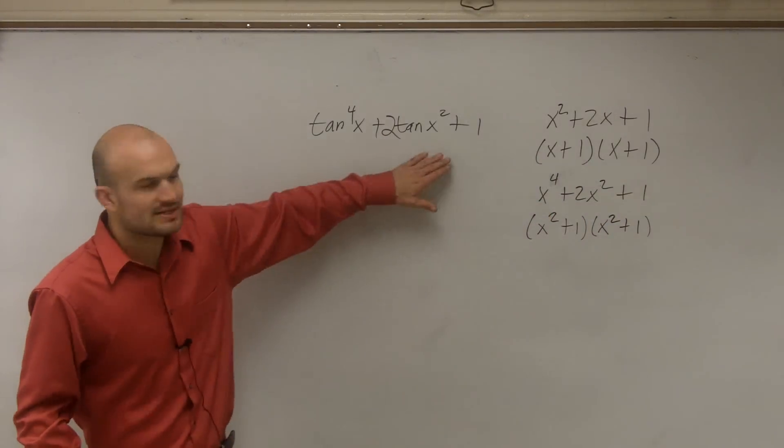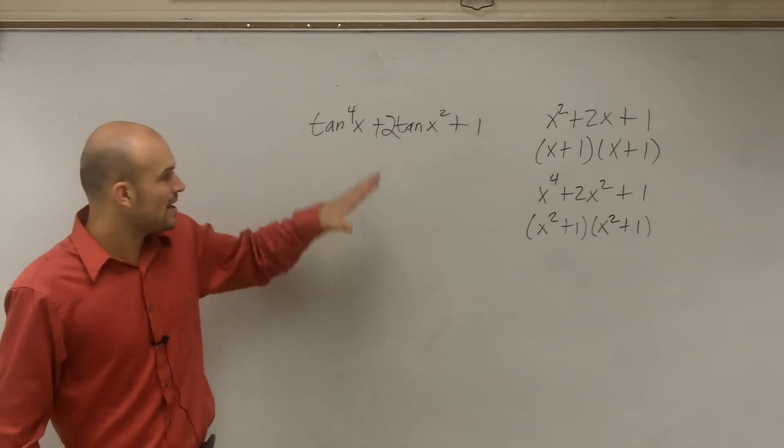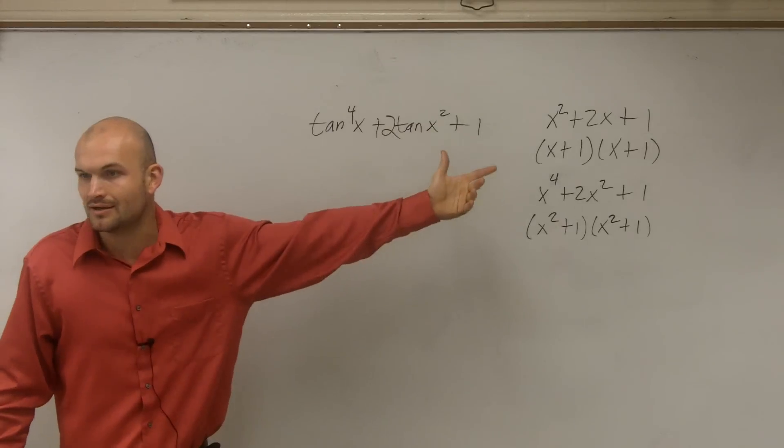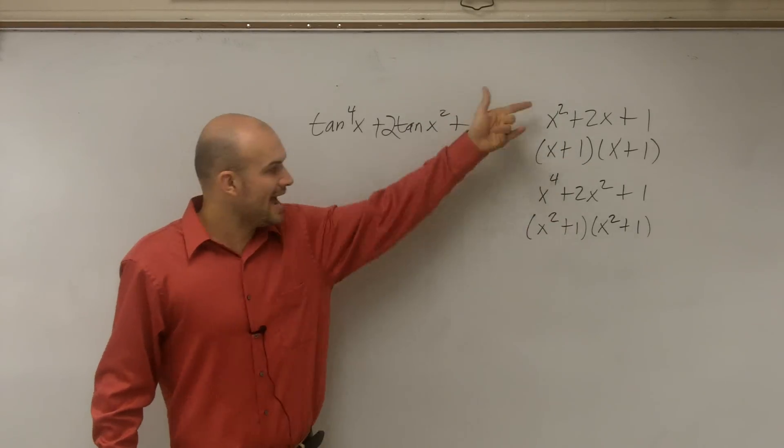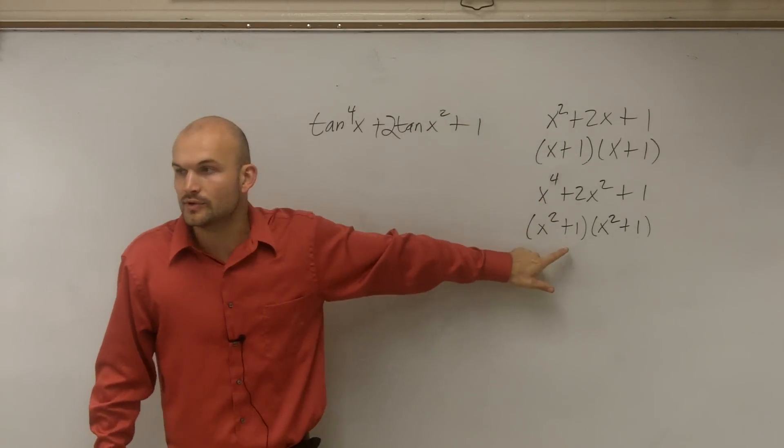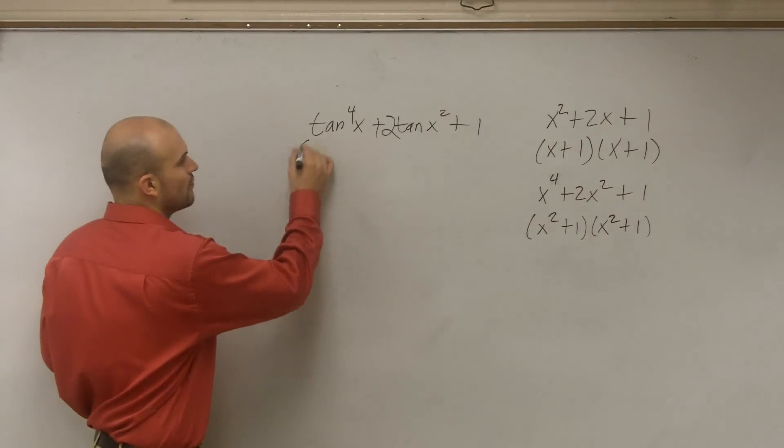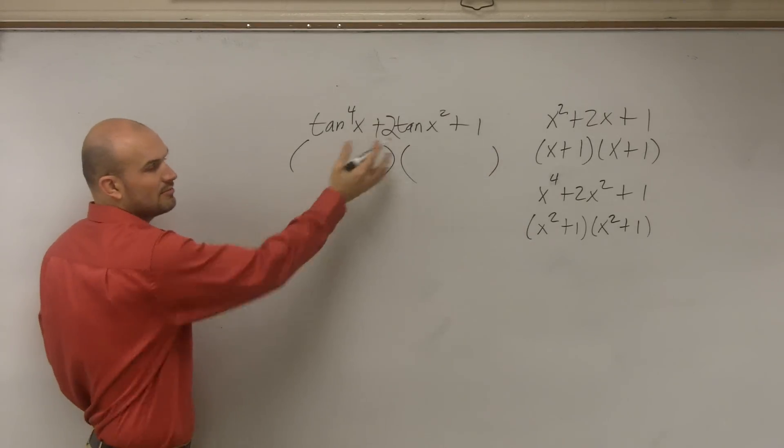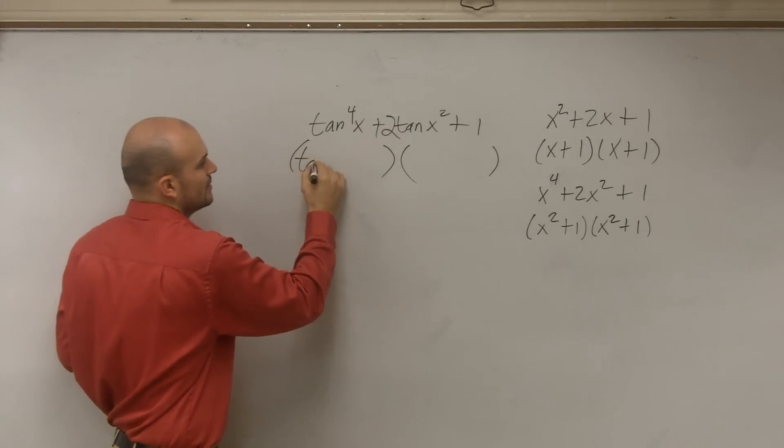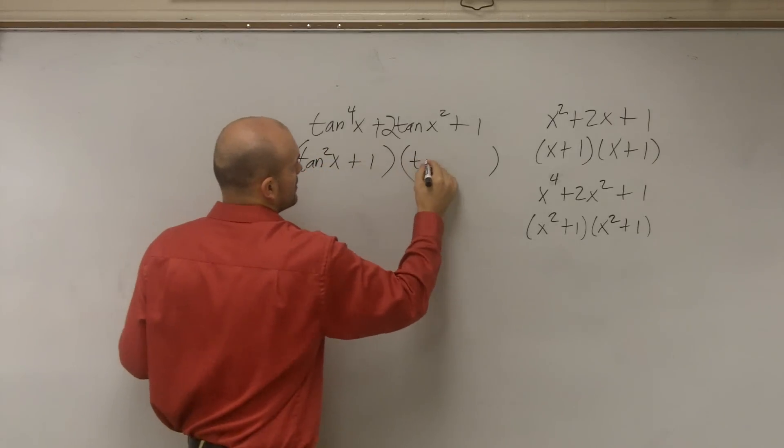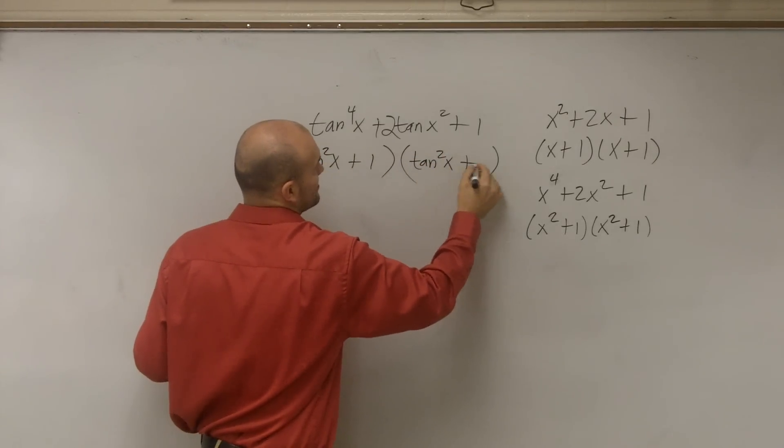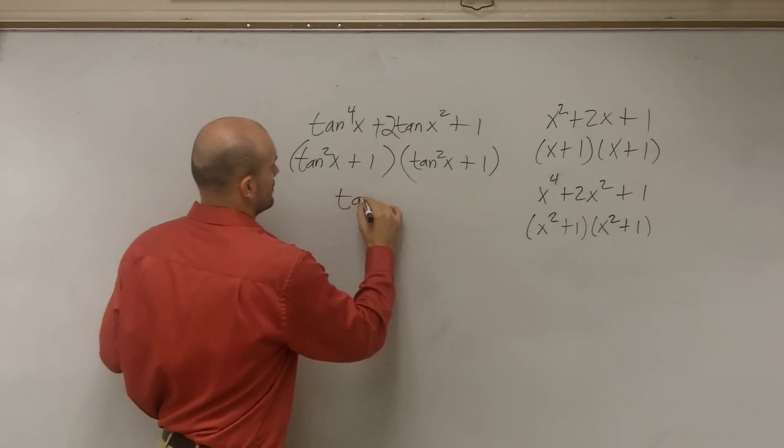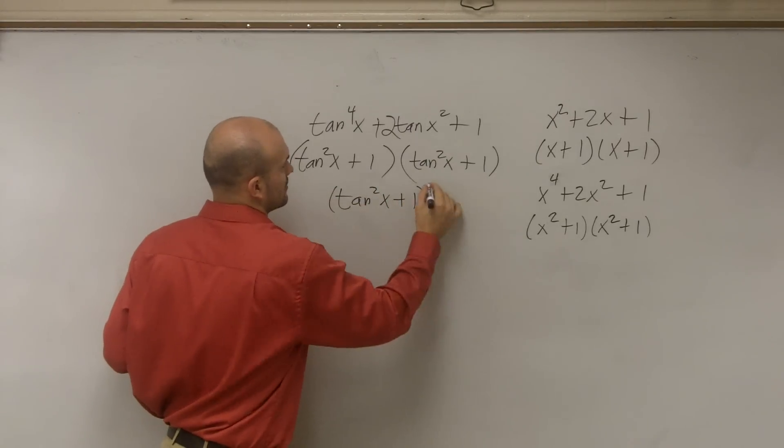So what we're looking at now is we just have a problem with tangents. So rather than just having the x's, all we're doing, ladies and gentlemen, is just putting in tangents in there. The factoring remains the same, but now your factors are going to include tangents. So therefore, the factored form of this is going to be, what are my factors that are going to multiply to give me this trinomial? So it would be tangent squared of x plus 1 times tangent squared of x plus 1, which is really tangent squared of x plus 1 squared, right?